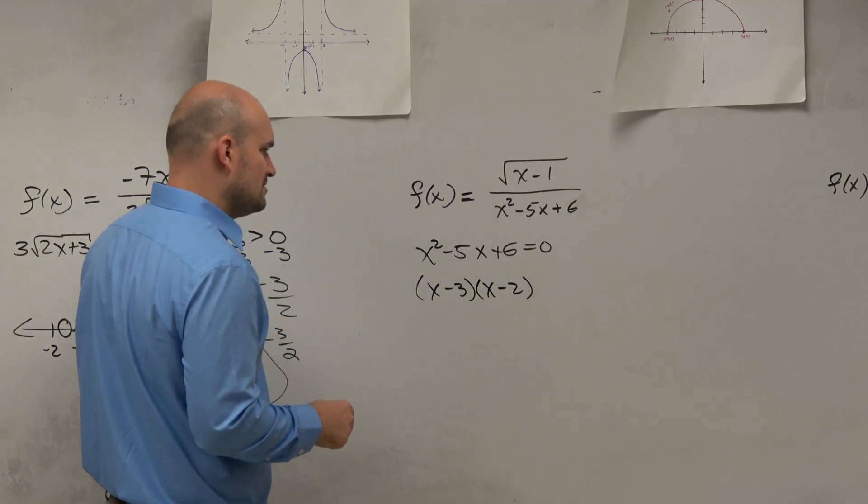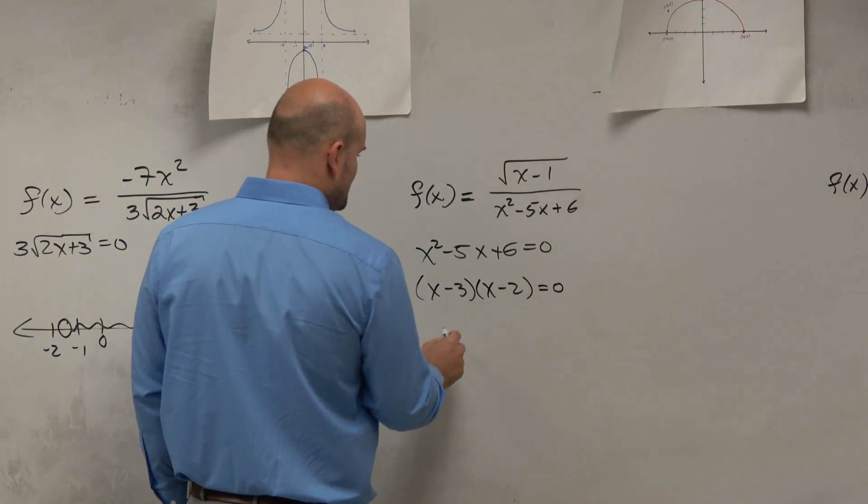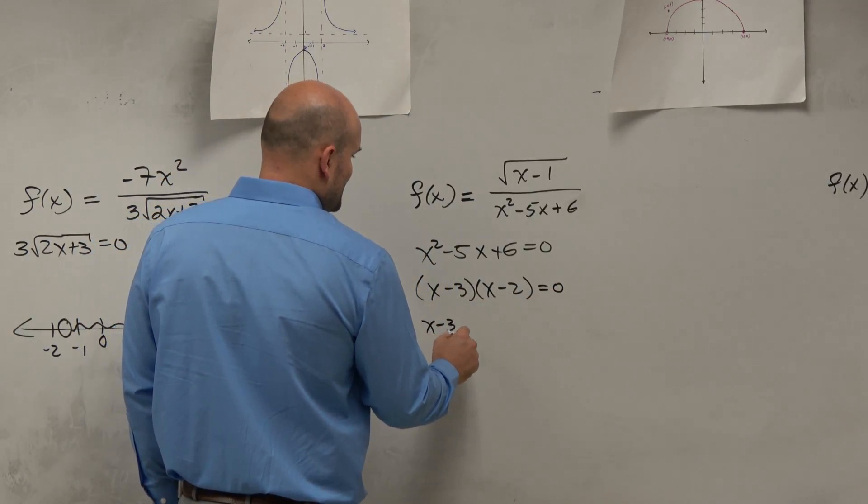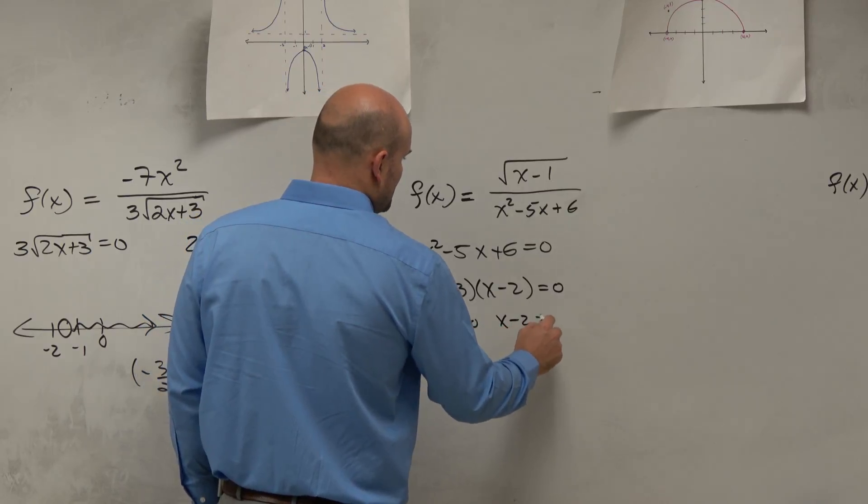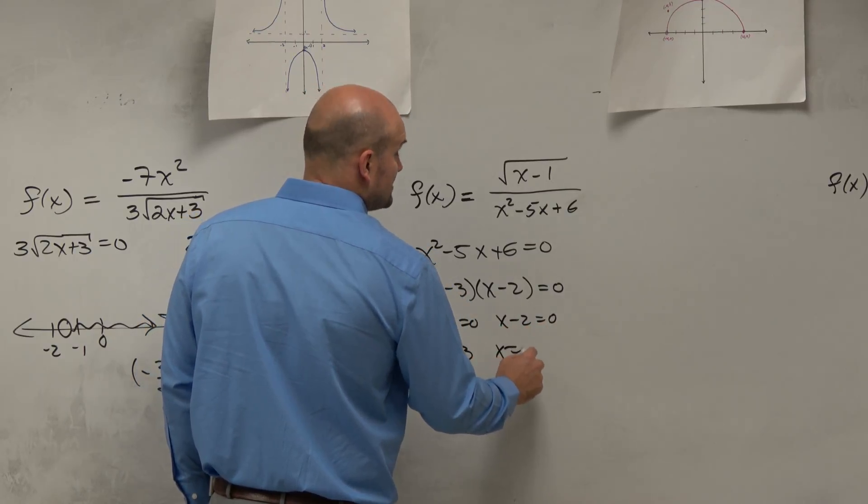That is not what I was, yeah, OK, that's fine. Equals 0, so therefore you can say x minus 3 equals 0, x minus 2 equals 0, x equals 3, x equals 2.